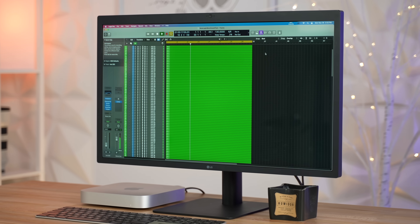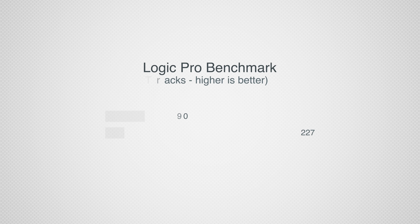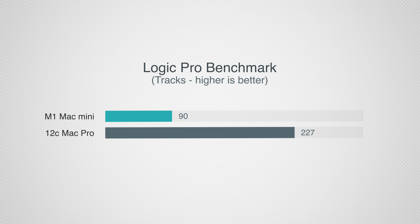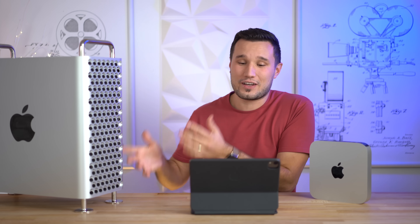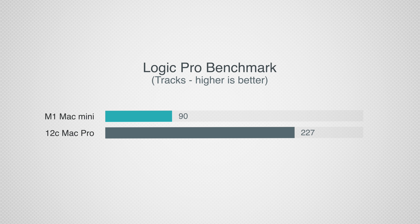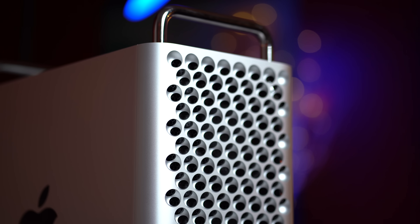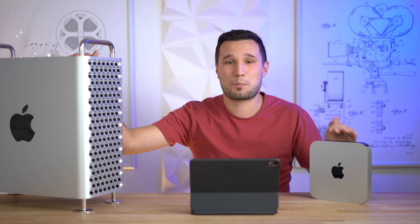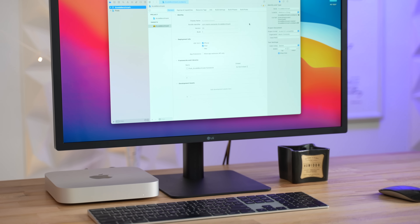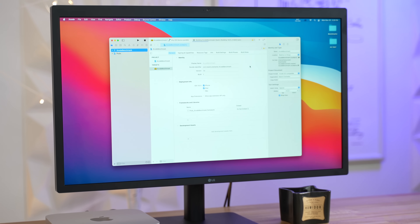For audio production in Logic Pro, the Mac Mini pulled off 90 tracks before it crashed — great performance, completely silent. The Mac Pro handled 227 tracks, also completely silent. For Logic, the Mac Pro is definitely on another level, but the M1 is plenty for most people.